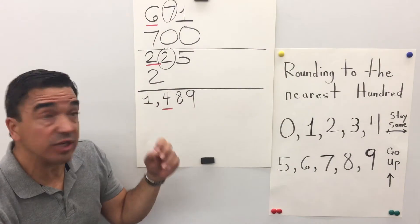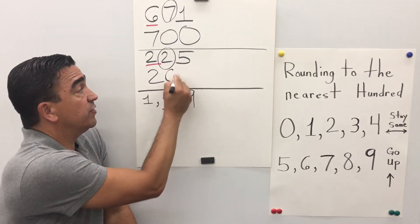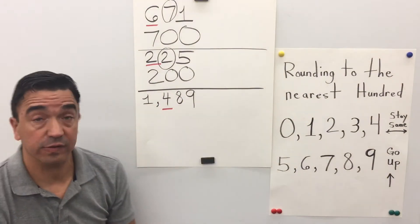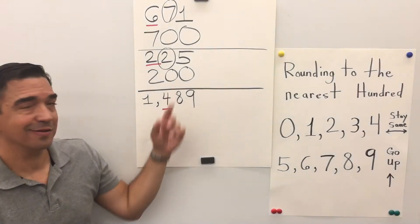Everything after becomes a 0. And there's 2 digits, so 0, 0. 225 rounded to the nearest hundred is 200.